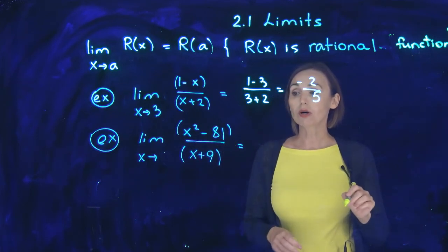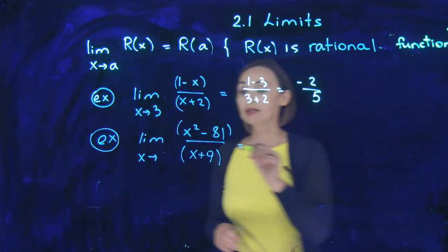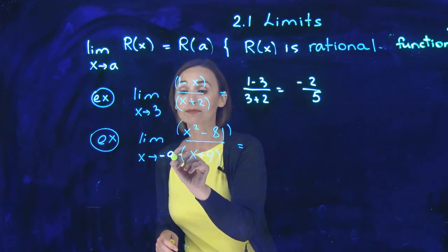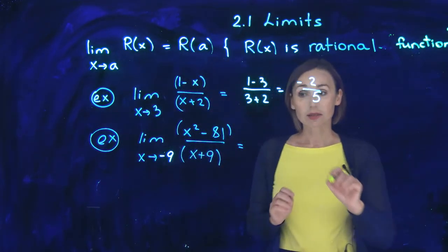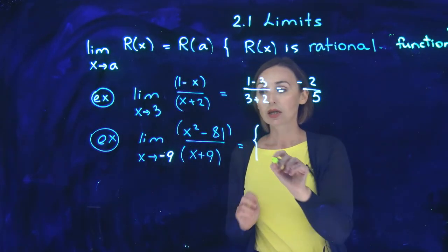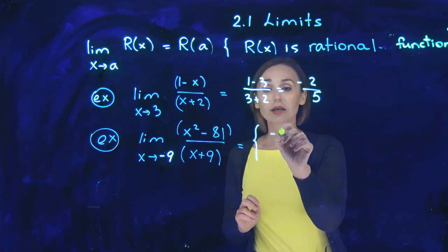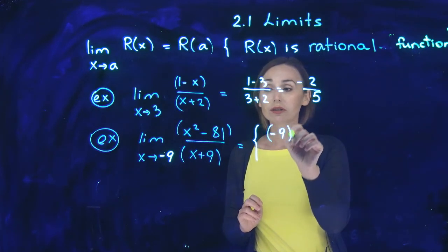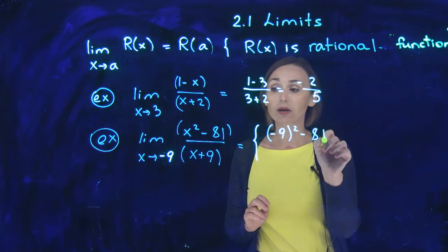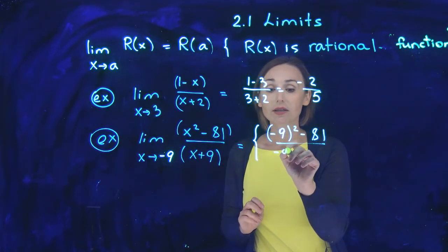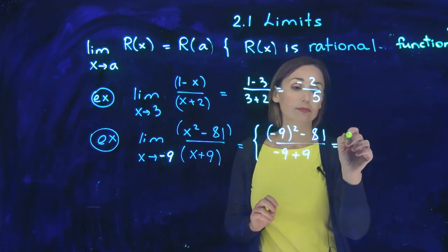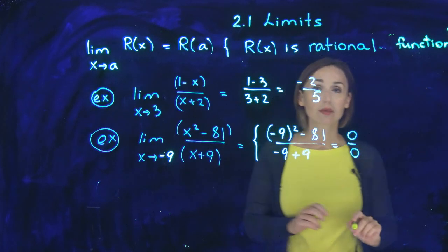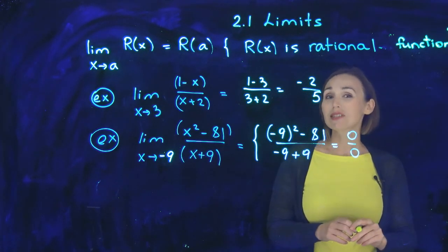Next example: x squared minus 81 over x plus 9 when x approaches negative 9. Let's plug in. If I plug in, I will get negative 9 squared minus 81 over negative 9 plus 9. And you can see that this is 0 over 0.